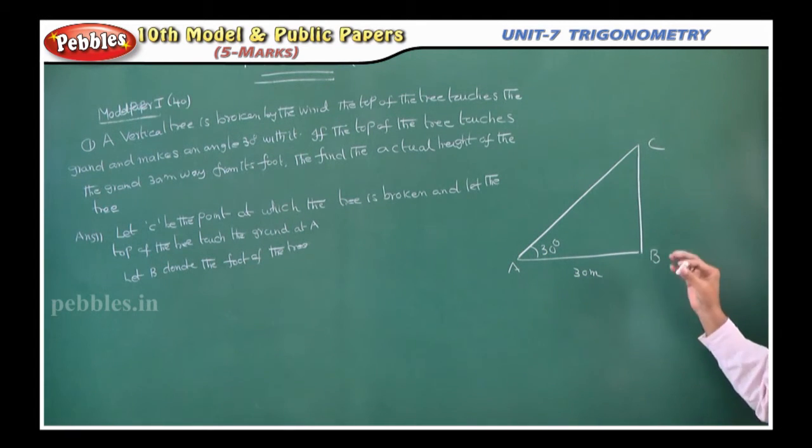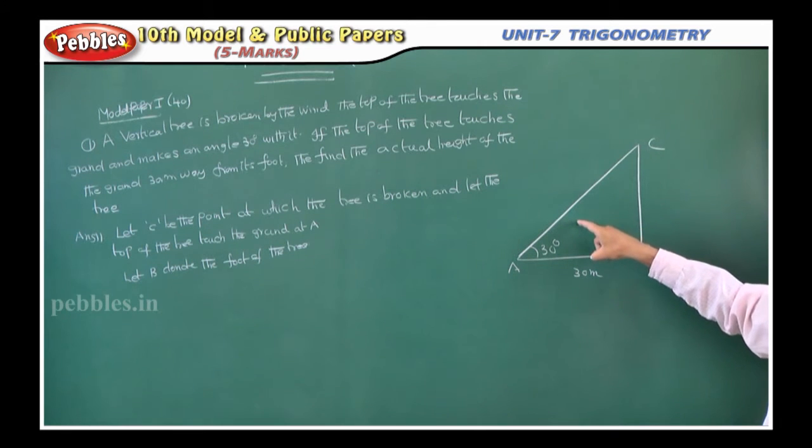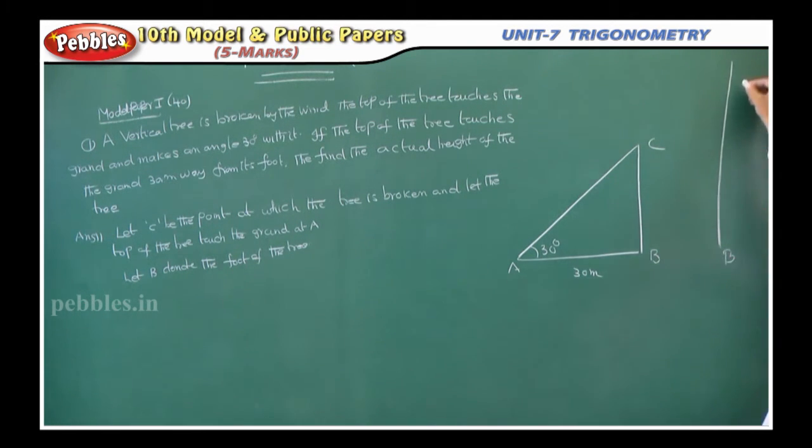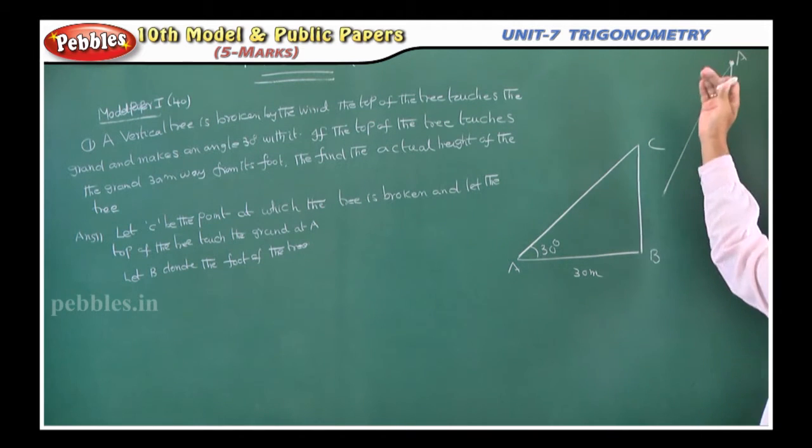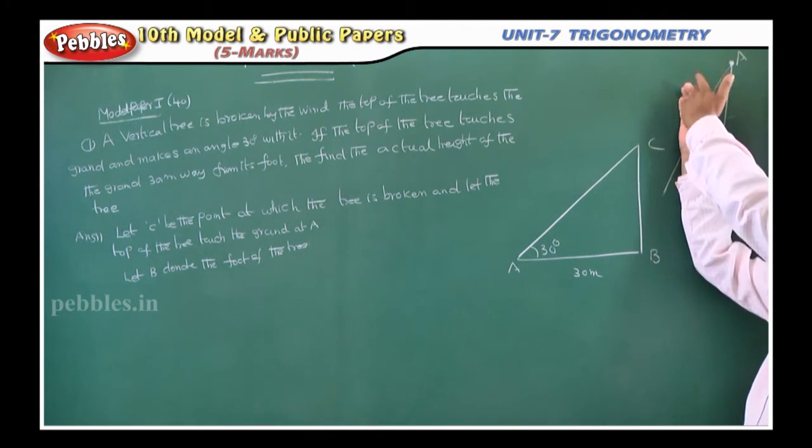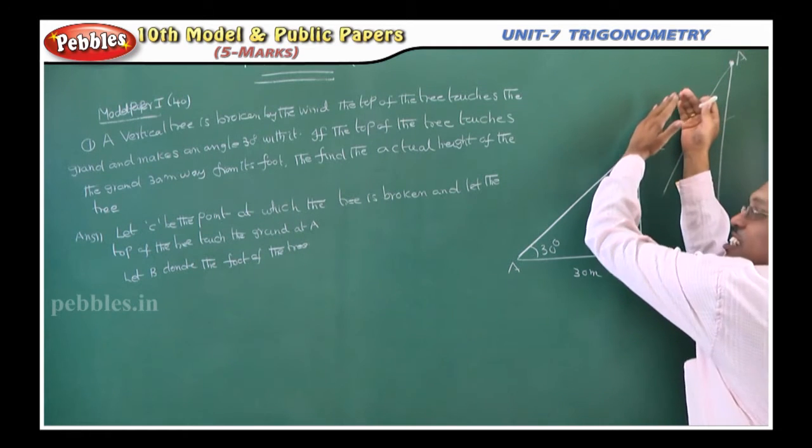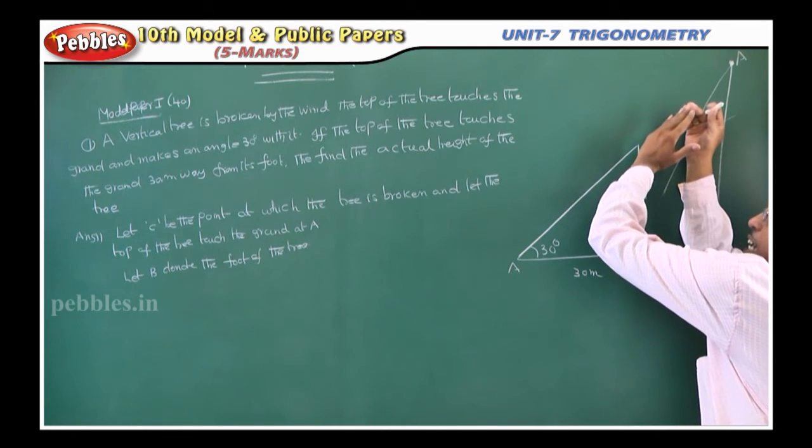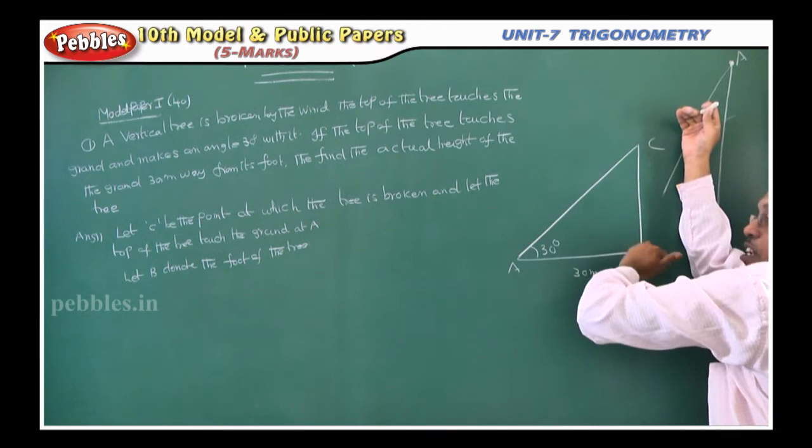Now there is a tree. Listen, this is after broken part, this is the diagram. Before that it is like this, BA. Now this is the top part. Due to the wind, this part is bended down, it fell down like this. It fell down, this is point C. We do not know at what part it fell down and it touches the ground. The initial position is like this. Now this top part bended like this. This is making an angle of 30 degrees with the ground.